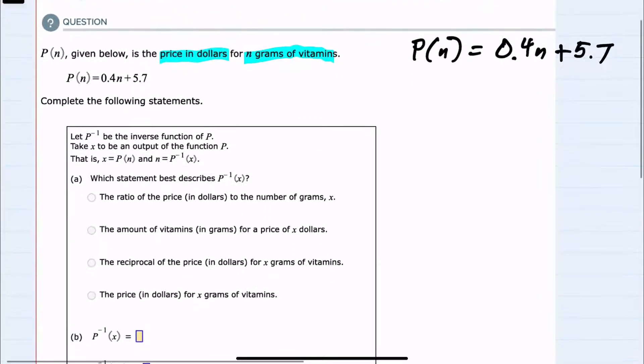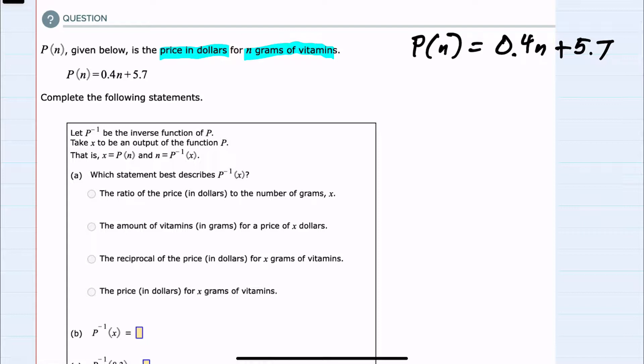Looking at the questions, we're told to let P inverse be the inverse function of P, and we're going to assume that x is the output for our current P function. So x is the price, and n is the number of grams.